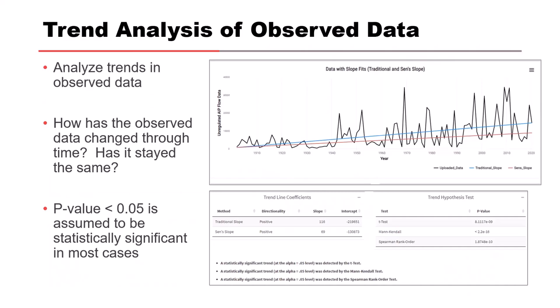The second step is to do trend analysis of observed data. You want to use unregulated data if you can, because you want to fit a distribution to it and see what's happening with those random stochastic processes — the underlying cause of non-stationarity. You can do basic trend analysis in Excel, or use Corps of Engineers tools where you upload your data sets and automatically get values from a variety of different tests showing whether the trend is increasing, decreasing, or staying the same, and whether that trend is statistically significant with a p-value of less than 0.05.